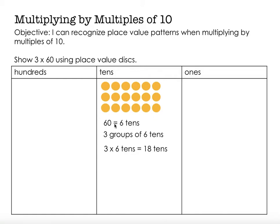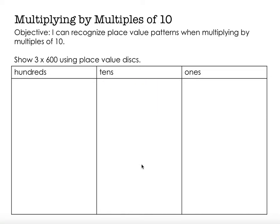I could also count by 3s: 3, 6, 9, 12, 15, 18 — and I would get the same result. So I have 3 groups of 6 tens, that's 18 tens total. Another way of writing that is 18 with a 0 in the ones place. Before I had 3 times 6 is 18. Now with 60 being 10 times bigger, 3 times 60 gives me an answer that's still 18, except it's 10 times bigger.